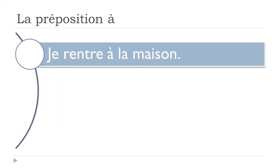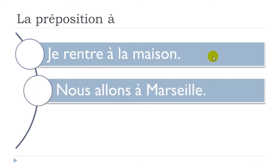Few examples for 'to'. 'Je rentre à la maison' — rentrer means to go back, so 'je rentre à la maison' means 'I go back home'. Second example: 'nous allons à Marseille' — aller means to go, so 'we go to Marseille'. In these cases, use the preposition À.